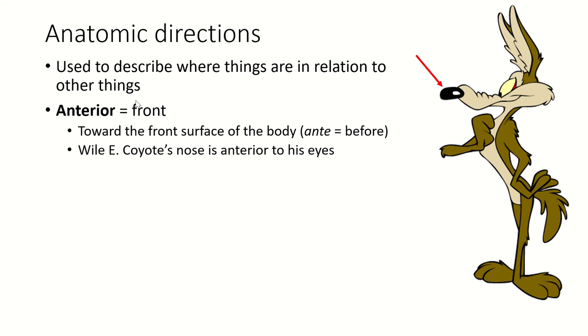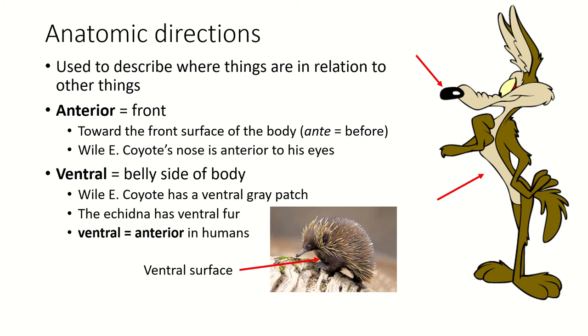Now, anterior means front. Ante means before. If you speak Spanish or Italian or French, these terms are going to be more familiar to you because a lot of these are based on Latin. Some of them are also based on Greek. So if you speak Greek, that would be helpful. So anything that is anterior is toward the front of the body. So for example, a coronal section separates the anterior of the body from the posterior. Wile E. Coyote's nose is the most anterior thing on his body.